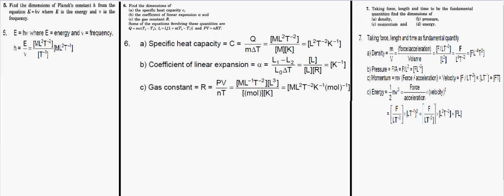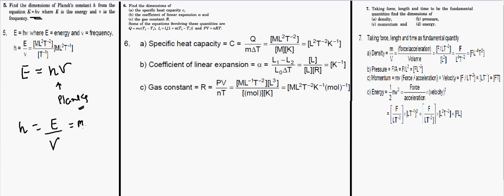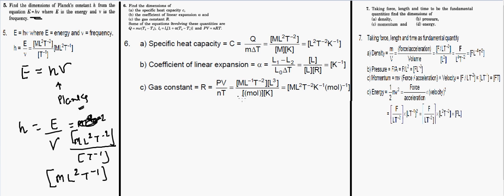For Planck's constant, energy E = hν, so h = E/ν. Energy has dimension ML²T⁻², and frequency is T⁻¹. Dividing ML²T⁻² by T⁻¹ brings T to the numerator, giving the dimension of Planck's constant as ML²T⁻¹.